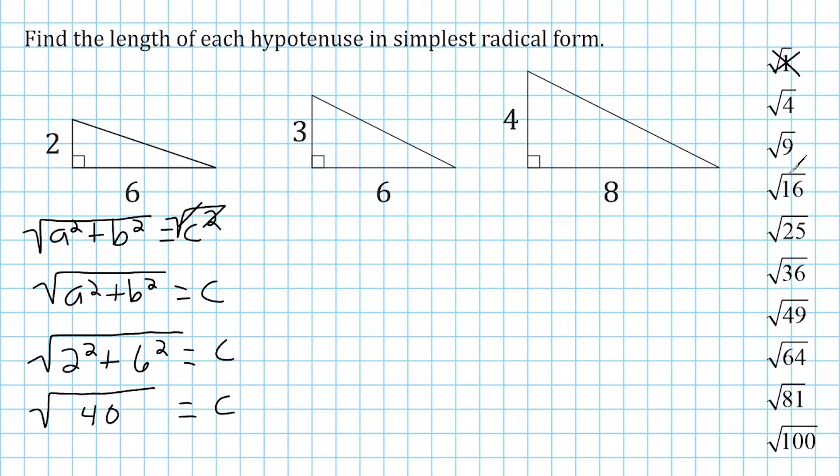9 does not, 16 does not, nor do any of these other perfect squares. So because 4 does fit perfectly into 40, what we could do is we could take 40 and break it into the factors 4 and 10. So whenever you are breaking something down in the simplest radical form, just take that number and break it into two factors, and one of them has to be a perfect square.